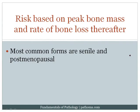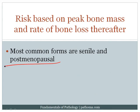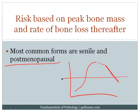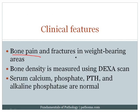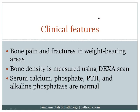Clinical features include bone pain and fractures in weight-bearing areas: the vertebra, causing loss of height and kyphosis; the hip; and the distal radius. Bone density can be monitored with a DEXA scan. Very high yield: in osteoporosis, calcium, phosphate, PTH, and alkaline phosphatase are all normal — no abnormal labs. This distinguishes it from osteomalacia, which can present similarly but is due to vitamin D deficiency.